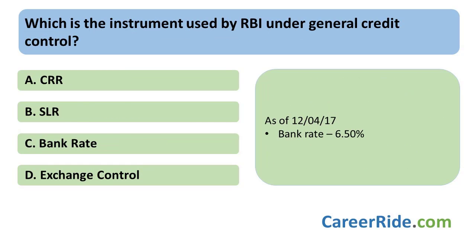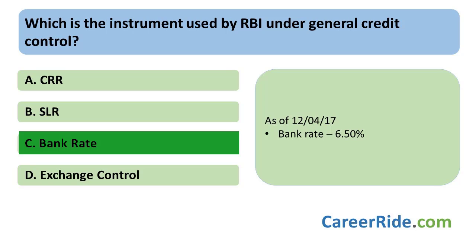Which among the following is the instrument used by RBI under general credit control? The correct answer is C — Bank Rate. Bank rate, also known as the discount rate, is the rate of interest charged by RBI for providing funds or loans to the banking system. An increase in bank rate increases the cost of borrowing by commercial banks, which results in reduction of credit; indirectly it results in a decline of money supply in the market. An increase in bank rate is a symbol of RBI tightening the monetary policy.